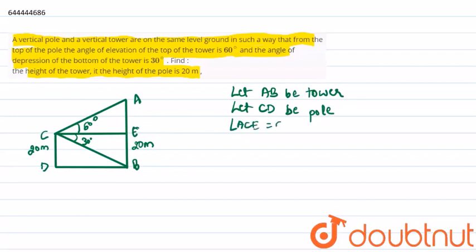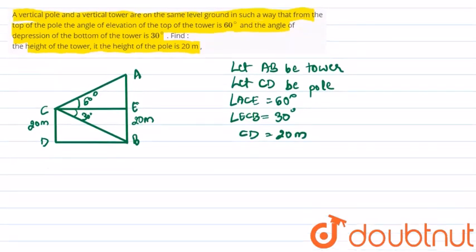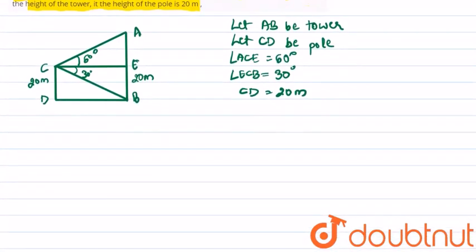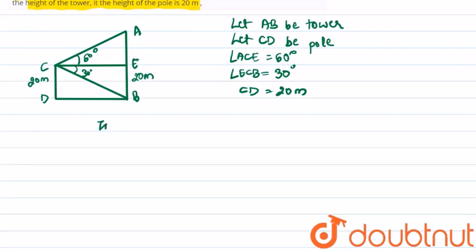Therefore, angle ACE equals 60 degrees and angle ECB equals 30 degrees. We have been given that the height of the pole, that is CD, equals 20 meters. Now in triangle CEB, we have angle ECB equal to 30 degrees, therefore tan 30 degrees...